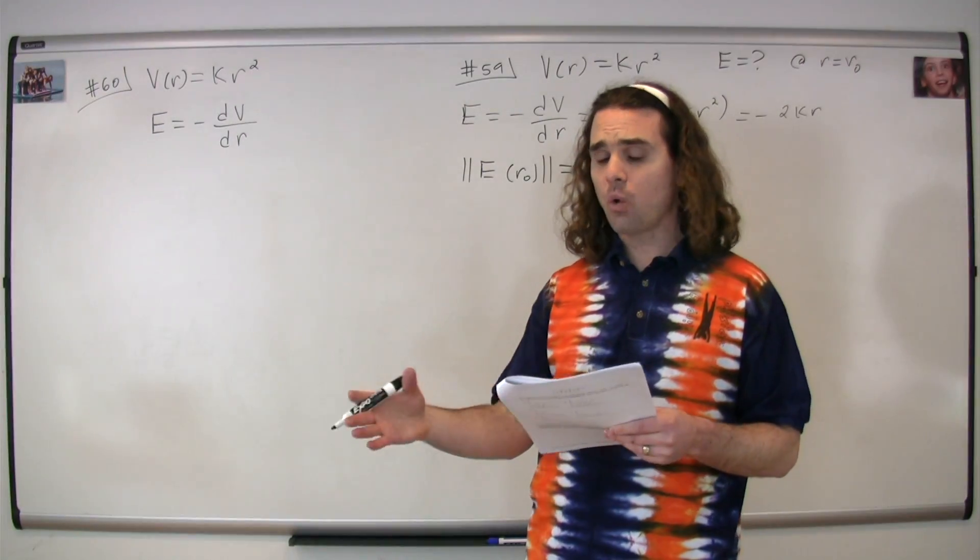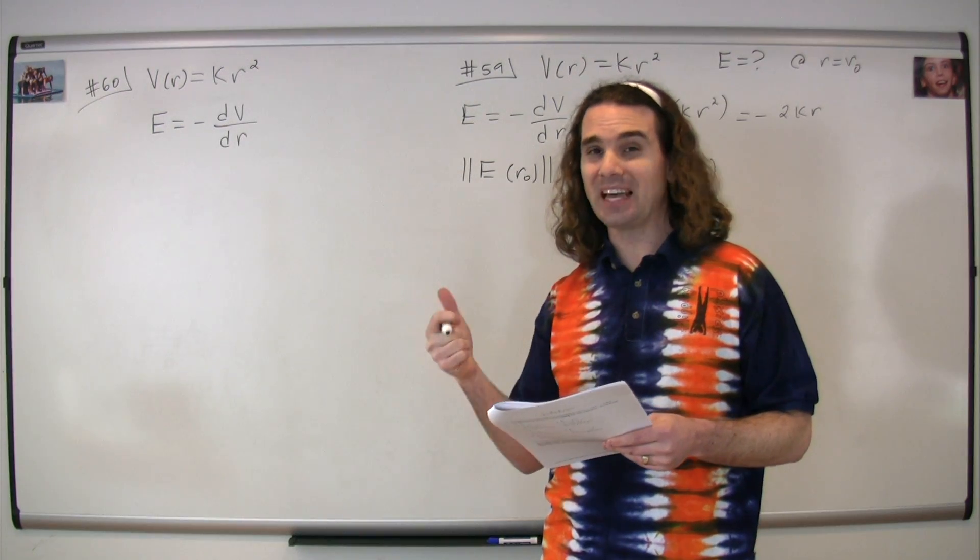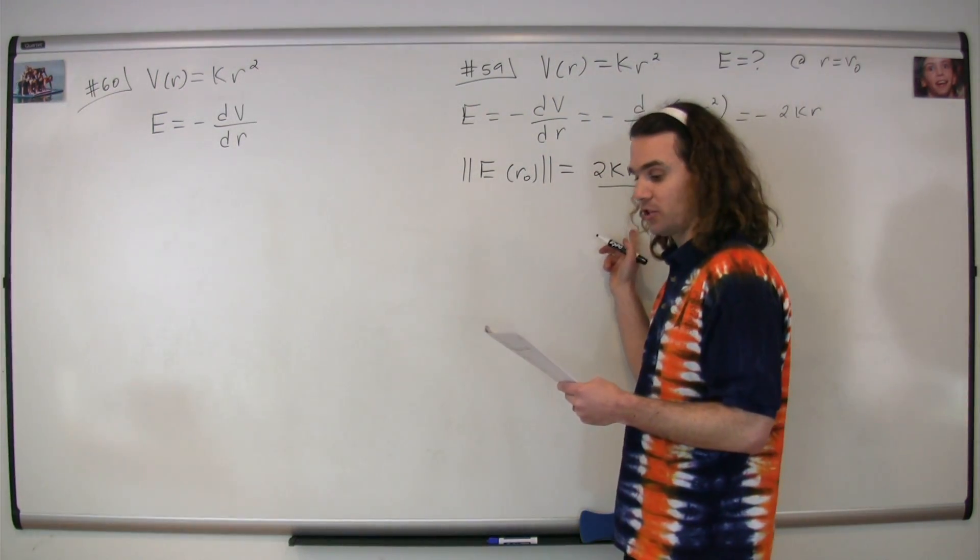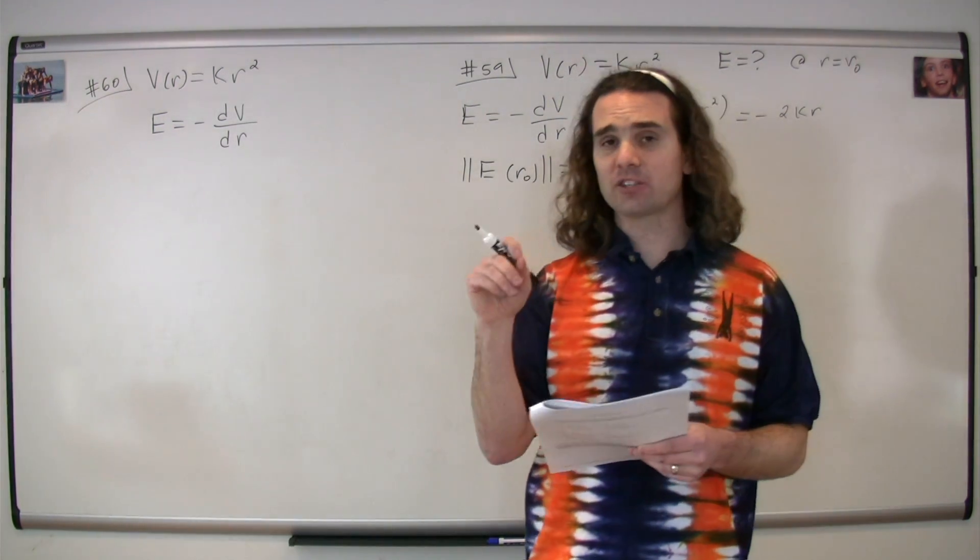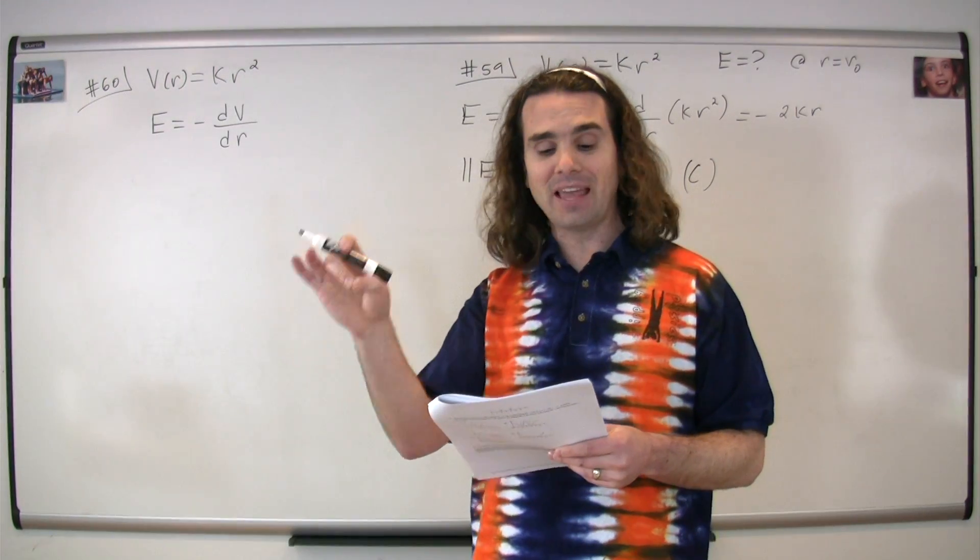And the question is, what are the directions of the electric field at a distance r0 from the origin? And what is the direction of the electric force on an electron placed at r0?